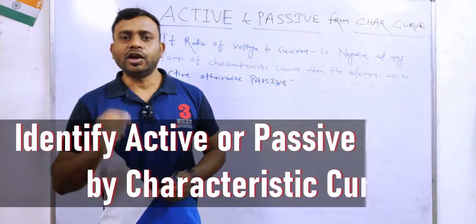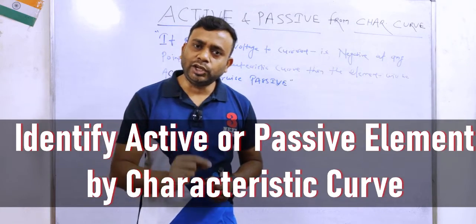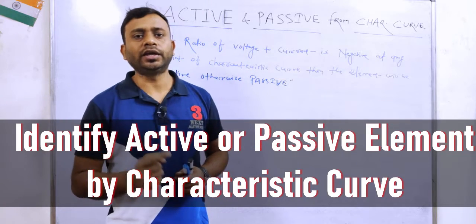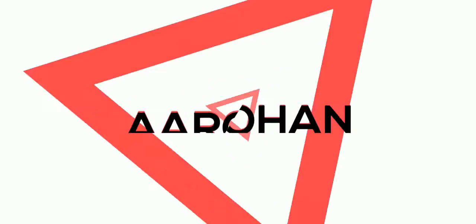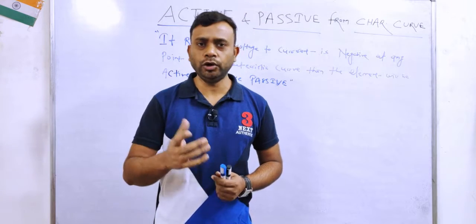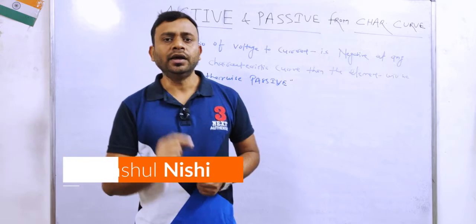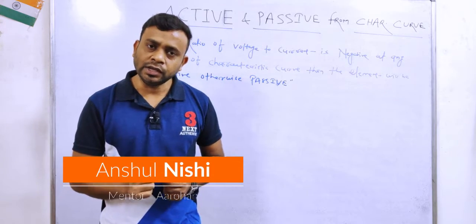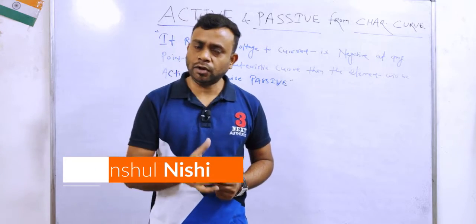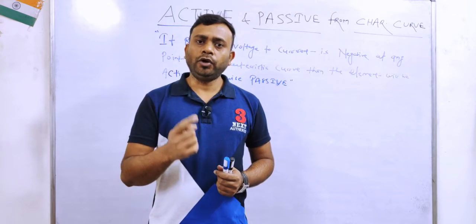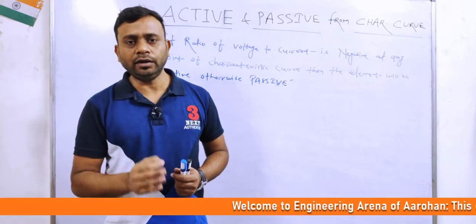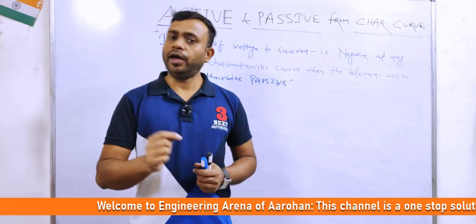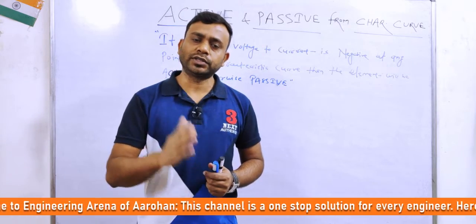Today we are going to see how to identify the active and the passive nature of the elements from the given characteristic curve. As we have discussed in the previous topic, I told you how to identify the bidirectional and the unidirectional property of an element from the given characteristic curve. In this video I am going to tell you how to identify the active and passive nature of an element from the given characteristic curve. This is a very important topic in terms of different competitive examinations.